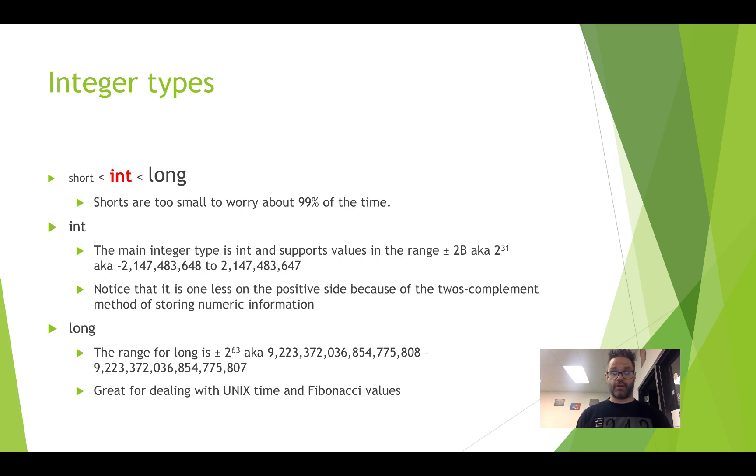On the long approach, we have an even wider range, aka plus or minus 2 to the 63rd power. As you can see, that's way too big of a number to bother saying. However, this number is amazing for dealing with Unix time. We have to actually keep track of time on a machine and Fibonacci values. And you can see that later on.